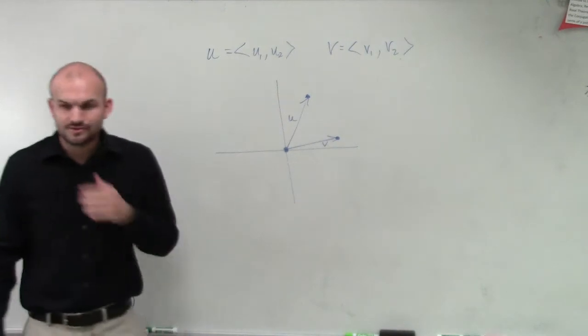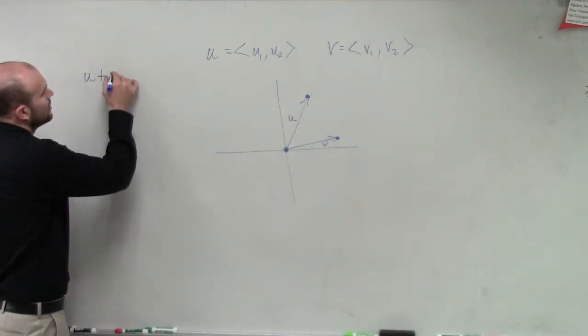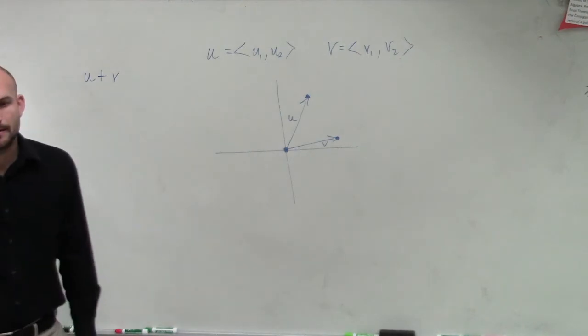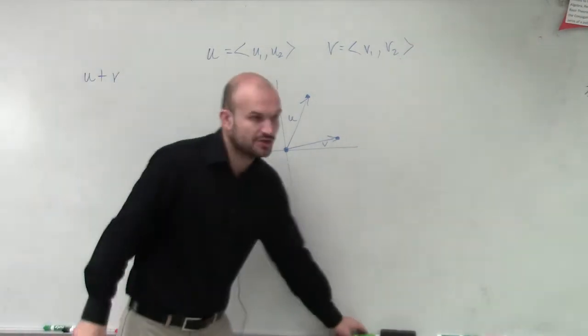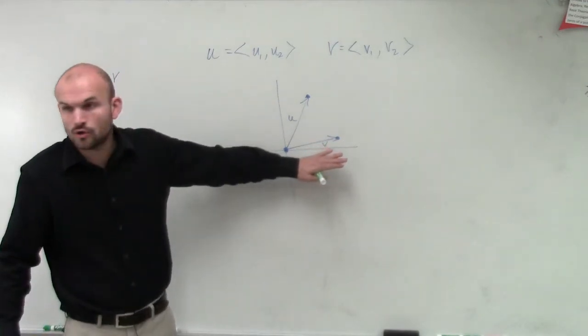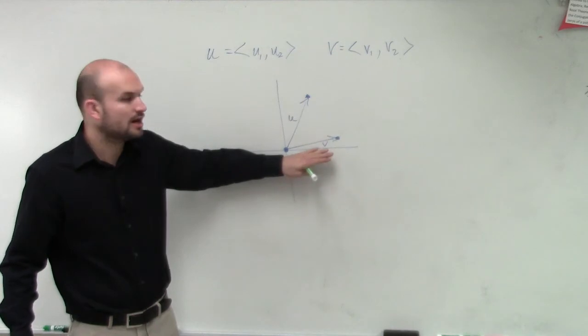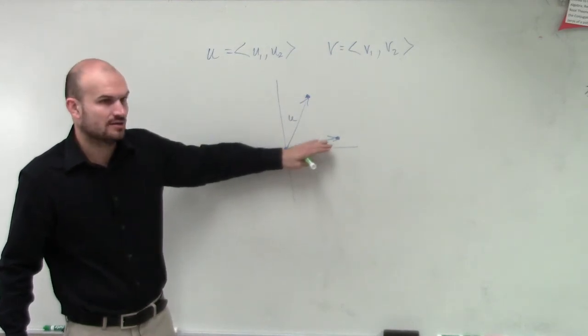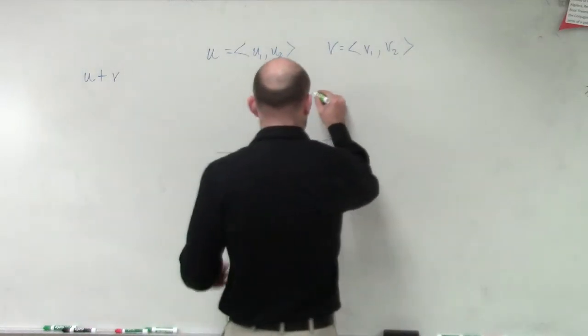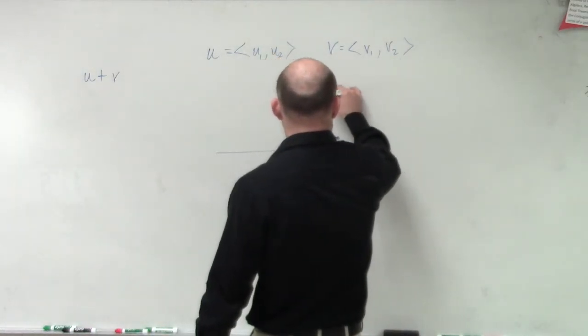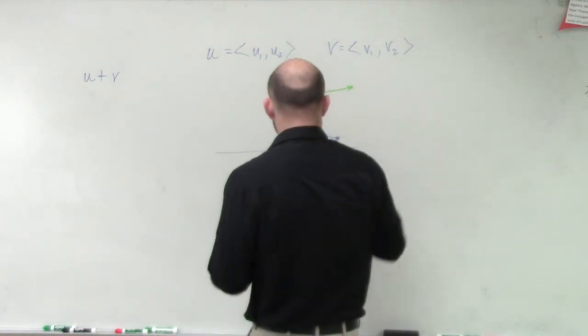So what if I was going to say now, I want to figure out what is u plus v? So to figure out what u plus v is, what we're going to do is we're going to transpose one vector to the end of the other vector. So I'm going to just try to do my best here.